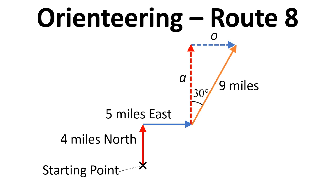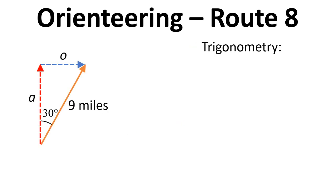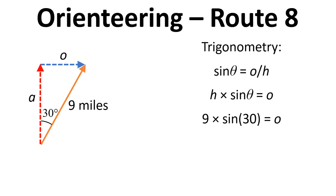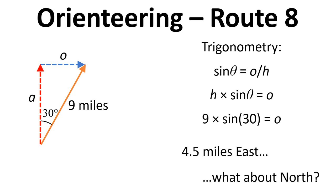We're going to work out the adjacent angle to the 30 degrees, which will tell us the additional distance we've gone north, and then we'll work out the opposite, which tells us the additional distance we've travelled east. We're going to use trigonometry: sin θ equals opposite over hypotenuse. Multiplying both sides by the hypotenuse gives h times sin θ equals opposite. Putting in the numbers, we find the opposite is 4.5 miles east.